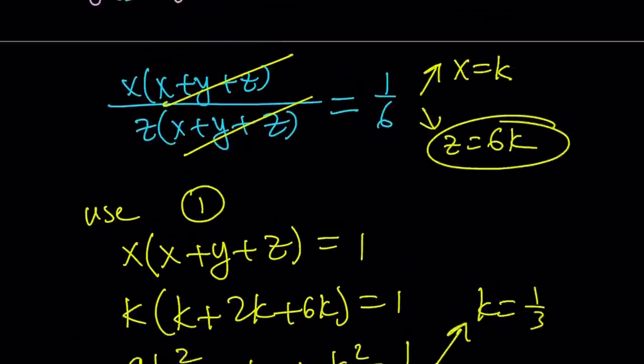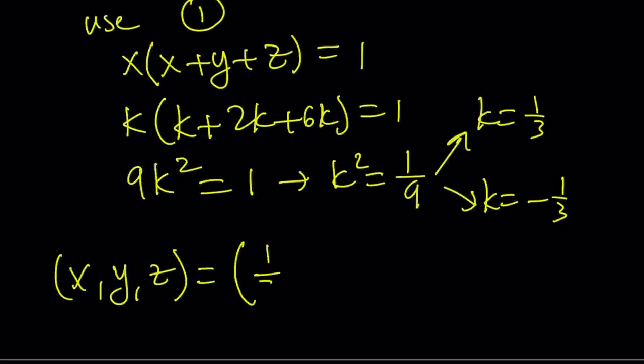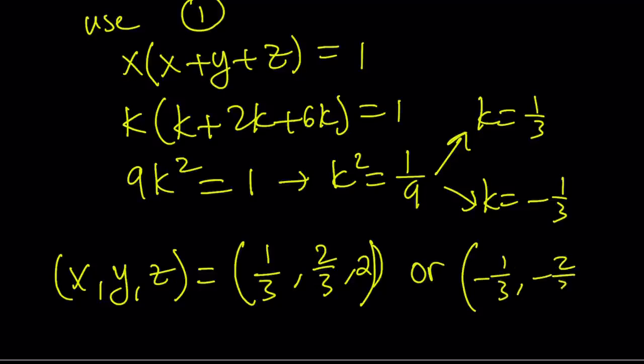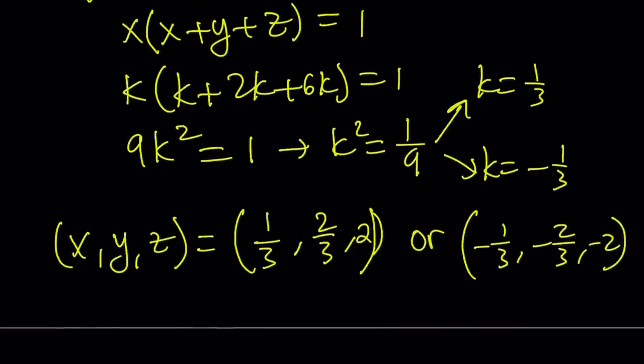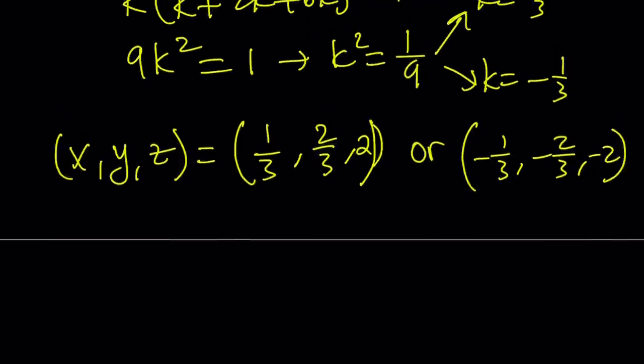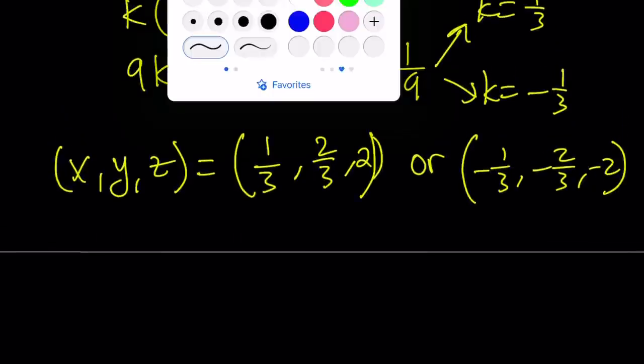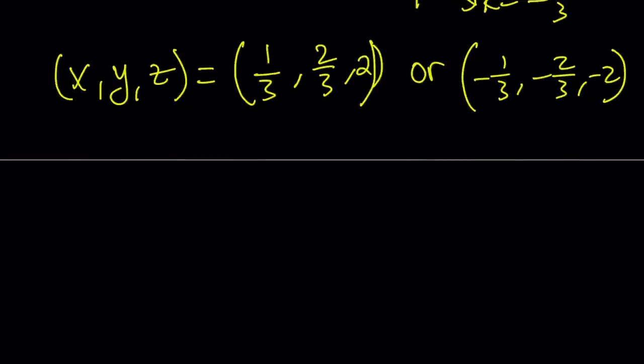If k is 1 third, notice that x is equal to k. So x is going to be 1 third. y is going to be 2 thirds. And z is going to be 6 thirds, but I can write it as 2. Or it's going to be the opposites. Negative 1 third, negative 2 thirds, and negative 2. Those are going to be the possible ordered triples for x, y, z. Now let's go ahead and talk about the... Here you can see that x plus y plus z does not equal 0. Let's go ahead and talk about the second method.